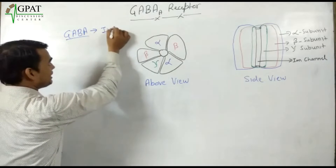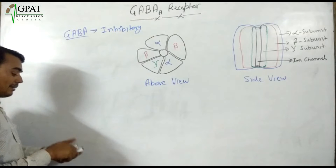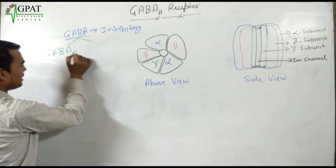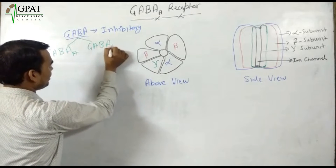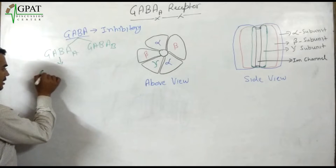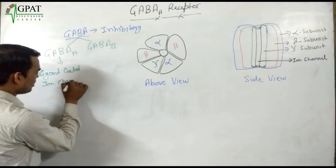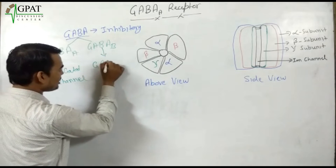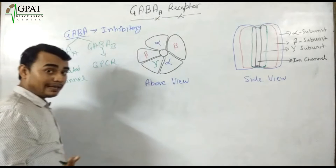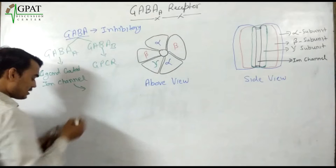GABA neurotransmitter is inhibitory in nature. GABA acts on two receptors: the first receptor is known as GABA-A, while the second receptor is known as GABA-B. GABA-A receptor is a ligand-gated ion channel, while GABA-B receptor is a G protein-coupled receptor. Today I am going to discuss only GABA-A.